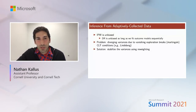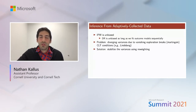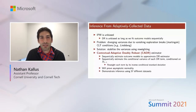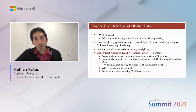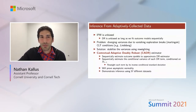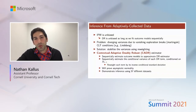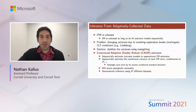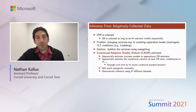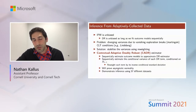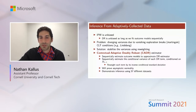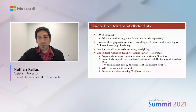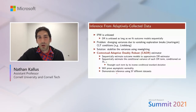The solution I'll explore is stabilizing the estimator using reweighting. Specifically, I'll develop the contextual adaptive doubly robust estimator, which proceeds as follows: first, sequentially estimate outcome models to approximate the DR estimator; then sequentially estimate the conditional variance of each DR term given the history; then reweight each term by the inverse of the estimated conditional standard deviation. This guarantees asymptotic normality, after which constructing confidence intervals is easy — just plus-or-minus two standard errors. I'll show on 57 datasets that this yields correct inference, whereas standard estimators give wrong confidence intervals.